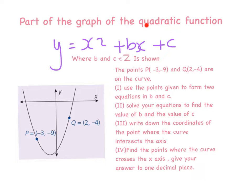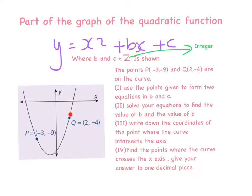The question says part of the graph of the quadratic function is x squared plus bx plus c. Any quadratic function will always have an x squared, an x, and a number. B and c are elements of Z, which is the notation for integer — a positive or negative whole number. We're given an x squared graph with two points: P is the point (-3, -9) and Q is the point (2, -4). We're asked a series of questions on this graph.